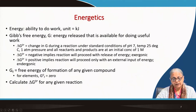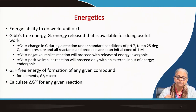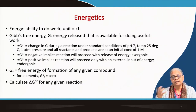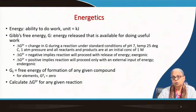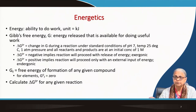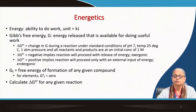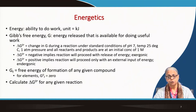If the value of delta G zero dash is negative, the reaction will proceed with release of energy — it is an exergonic reaction. If the value is positive, an external input of energy will be required, and the reaction is endergonic. Catabolic reactions are exergonic, and anabolic reactions are endergonic. To determine delta G zero for any reaction, you need the free energies of formation for all reactants and products. For elements, delta G zero F is assumed to be zero.